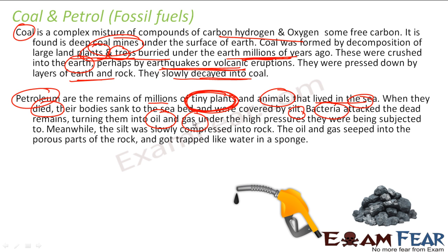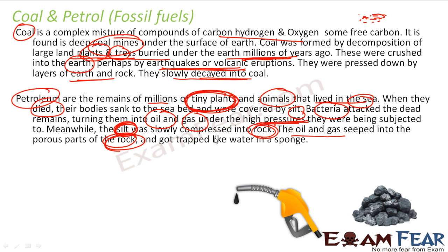The bacteria converted the dead sea plants and animals into oils under high pressure. Meanwhile, the silt became rock because of the pressure — silt is basically mud with water, and with pressure the silt becomes rock. And now this oil and gas you get from rock, stored in the pores of the rock — the petrols are stored in the pores of the rocks.